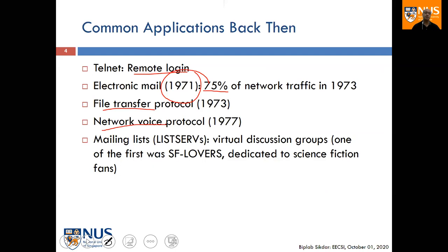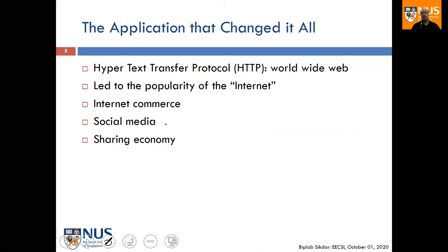Things started changing in the early 90s when HTTP was invented, which allowed people to search for information very easily. Previously, if you wanted to know about something, you'd go to a library, look up an encyclopedia, or ask someone who knew. With HTTP, it became quite easy to search for information on computers, which in turn led to applications such as e-commerce and social media.